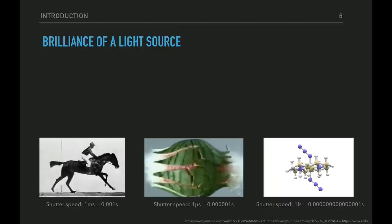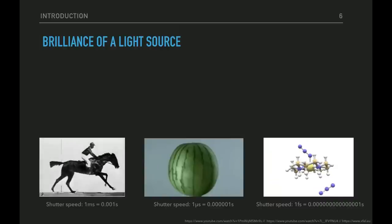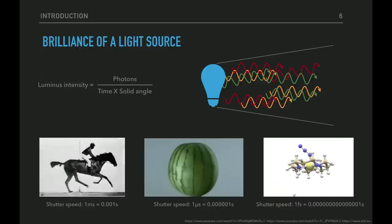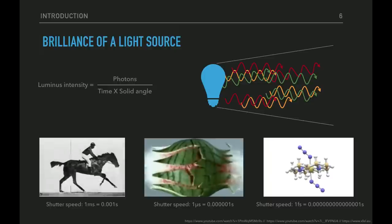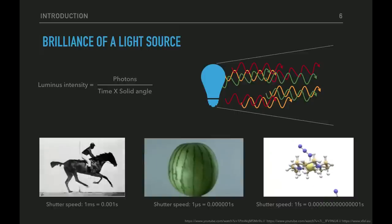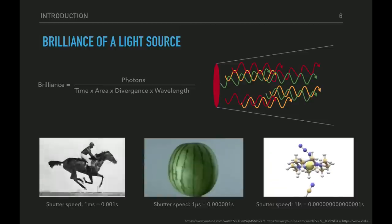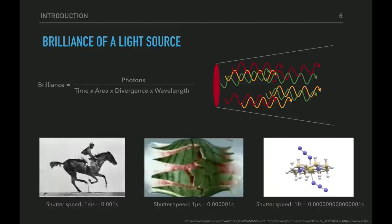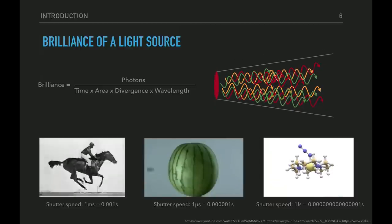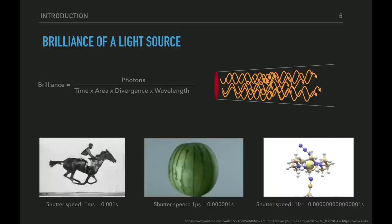To get enough light hitting your object in a very short amount of time while the shutter is open, you need big lamps. The figure of merit for a normal lamp is luminous intensity — photons per time per solid angle. But for X-ray diffraction images we need coherent light, so our figure of merit is called the brilliance of a light source: a lot of photons per time, emitted in a small spot size with small angular divergence and basically only one wavelength. This is our key metric.